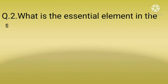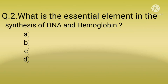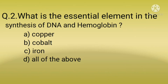Question number two: What is the essential element in the synthesis of DNA and hemoglobin? Options are: option A, copper; option B, cobalt; option C, iron; option D, all of the above. The correct option is option C, iron. Copper and cobalt are also required in the synthesis of DNA and hemoglobin, but iron is the essential one.